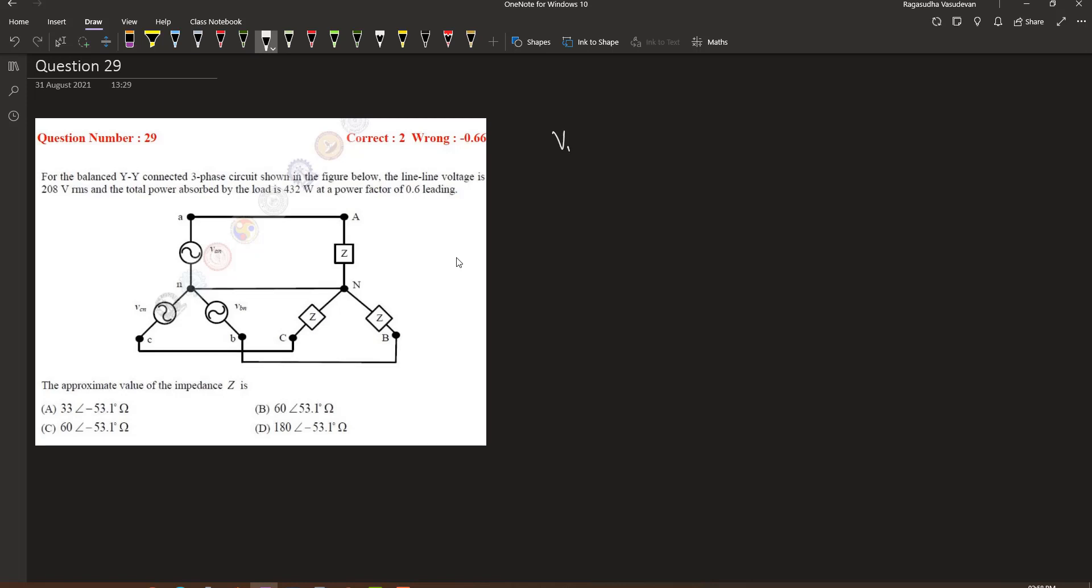Here it is given that the line-to-line voltage is 208V RMS and the power absorbed by the load, or the active power, is given by 432W, and the power factor is given as 0.6 leading. We are asked to find out the value of the impedance that is connected.